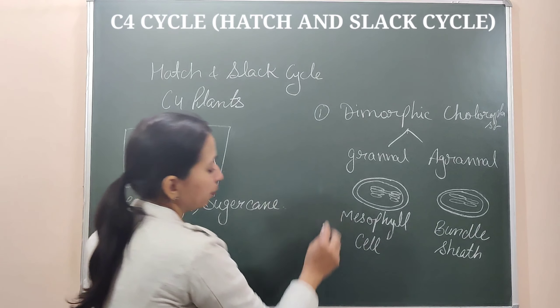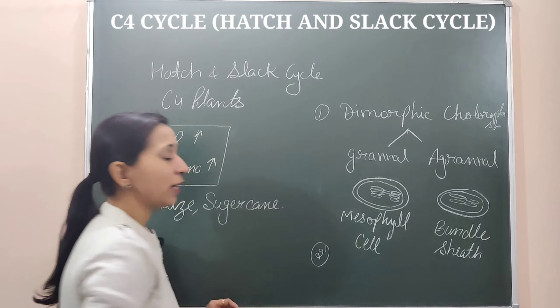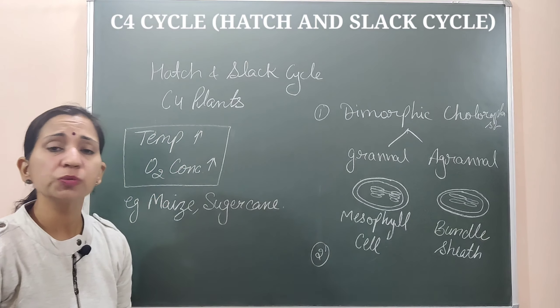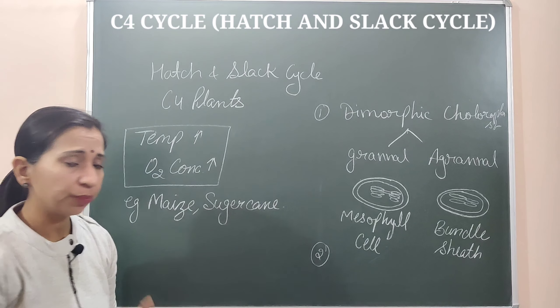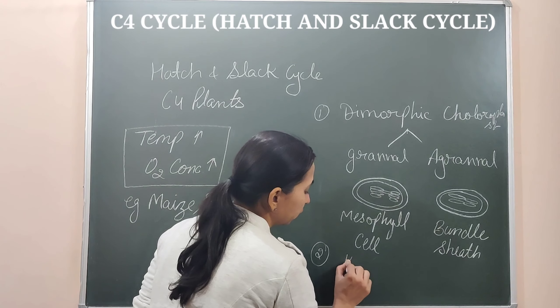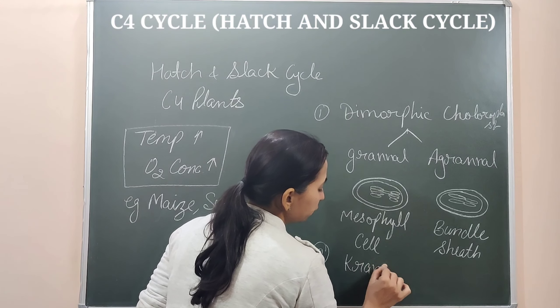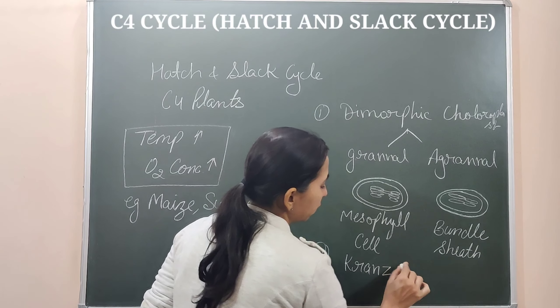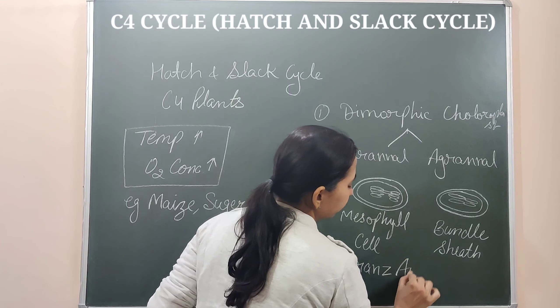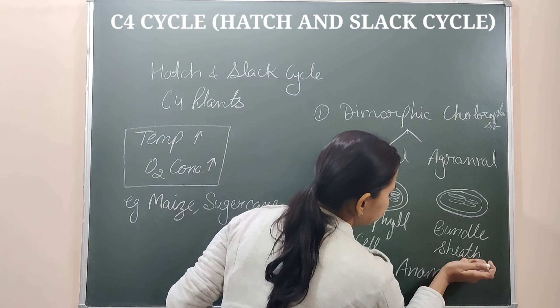The second adaptation found in C4 plants is that they have a specific anatomy known as Kranz anatomy. This is a special type of anatomy shown by C4 plants.